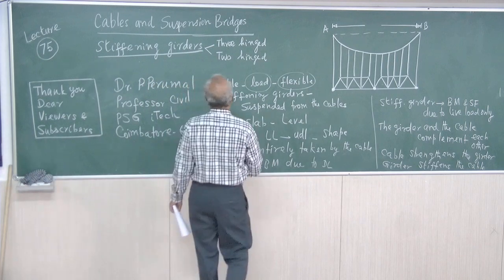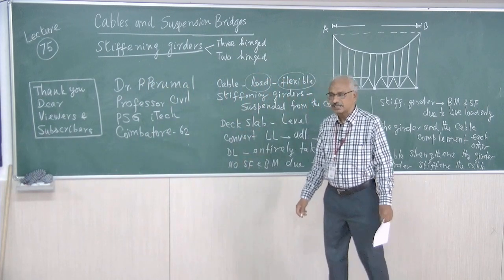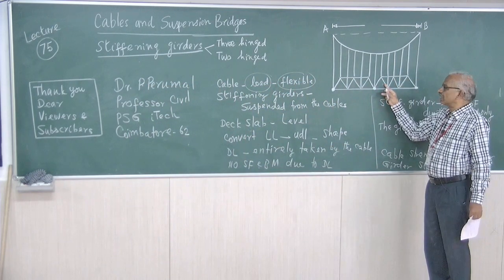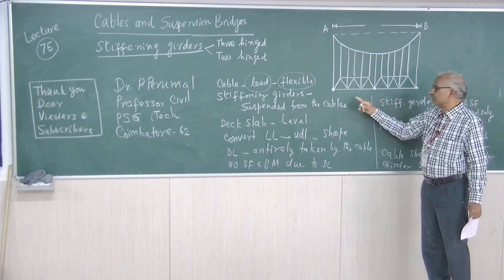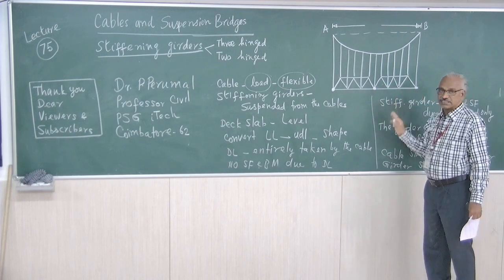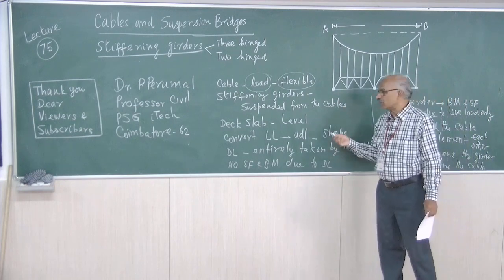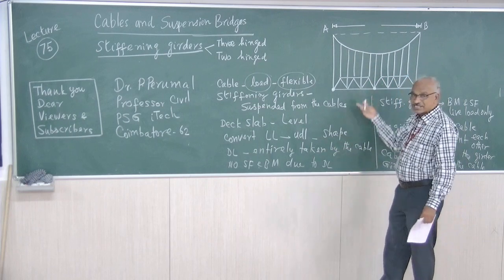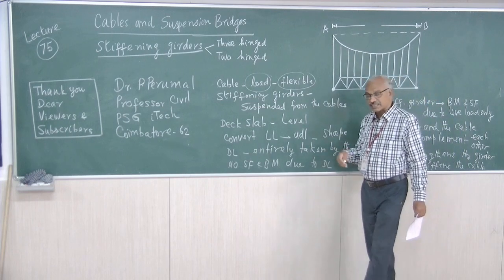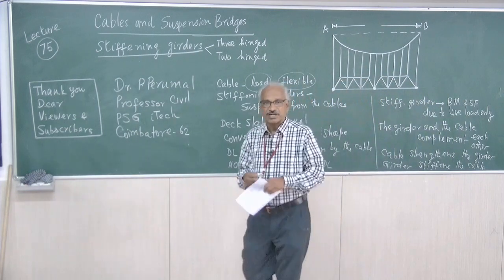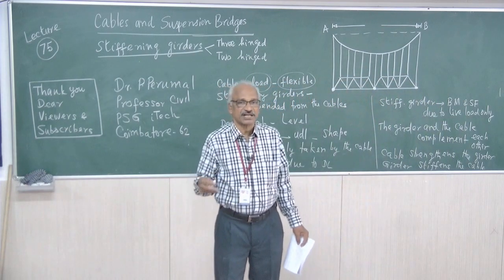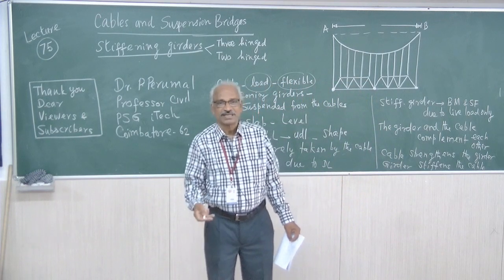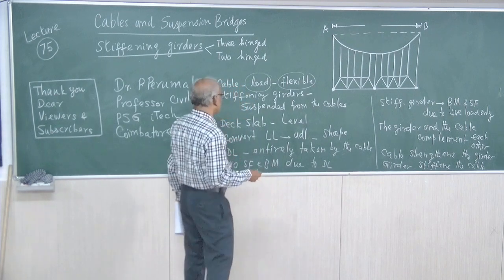Stiffening girders are of two types. One is a 3-hinged stiffening girder — with two hinges at the ends and one hinge at the center. The other is a 2-hinged stiffening girder. The stiffening girders are suspended from the cable because for a very long span, the 3-hinged stiffening girder cannot stand on its own. So it is actually suspended from the cable.